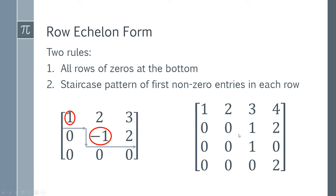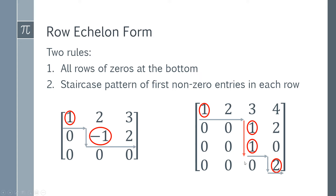This matrix, however, is not in row echelon form because it doesn't have the correct staircase pattern. If you draw on the first non-zeros in each row and trace the staircase, it isn't correct because there's a drop of two rows at one point. The third row should have its first non-zero one step over, but it doesn't. You have to be careful and make sure you have the correct staircase pattern with no double drops — further work is needed to get it into the correct form.